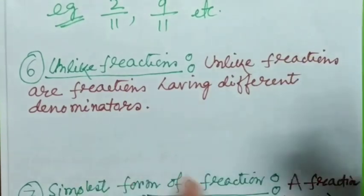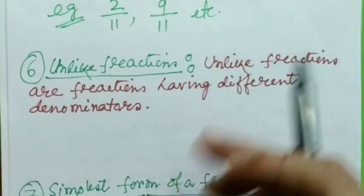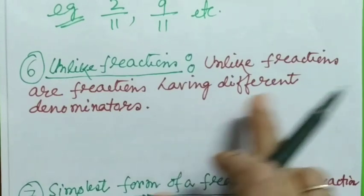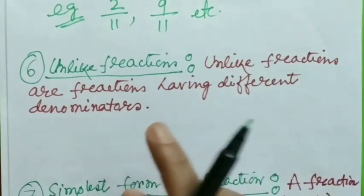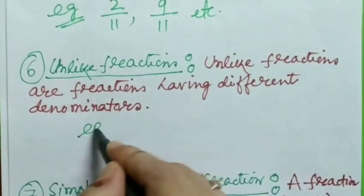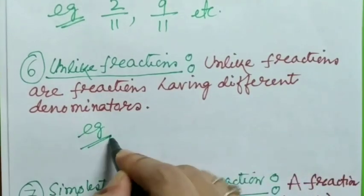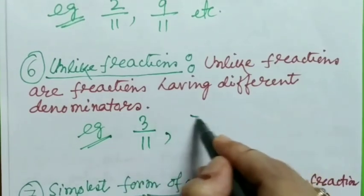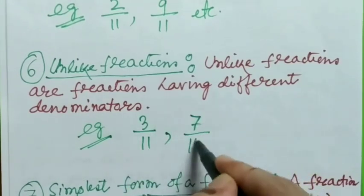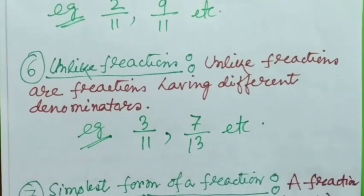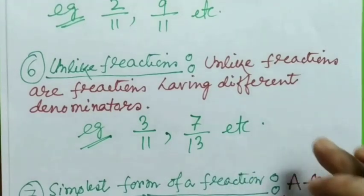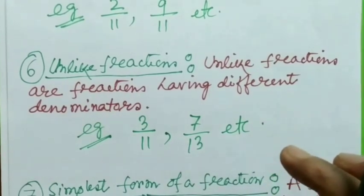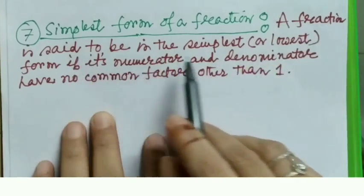Unlike fractions are the reverse — fractions having different denominators. For example, 3/11 and 7/30 are examples of unlike fractions.